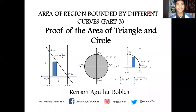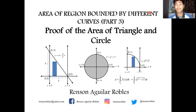Hello everyone, this is the third part of my video on the area of a region bounded by different curves. For this video, I'm going to show you how the area of a triangle and the area of a circle are obtained by applying some concepts of region between and under curves and by applying some concepts of integration. We all know that the area of a triangle is equal to one half times the product of the base and height, and that of the circle is π r squared.